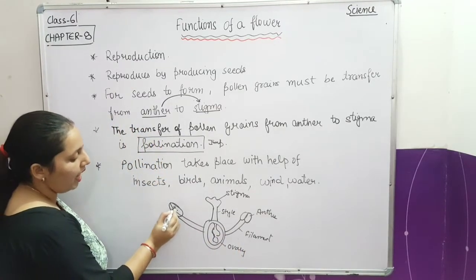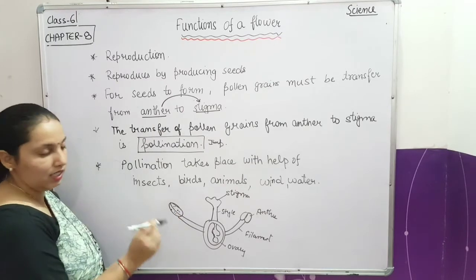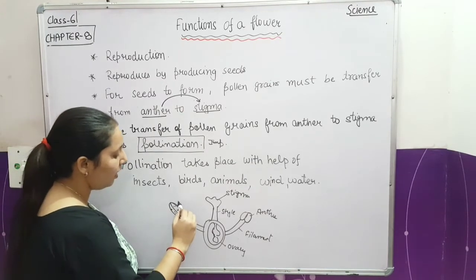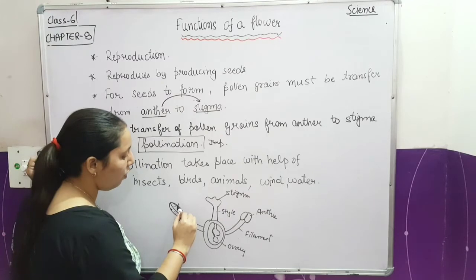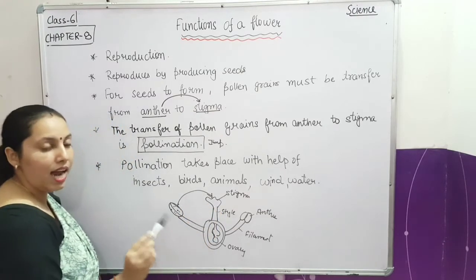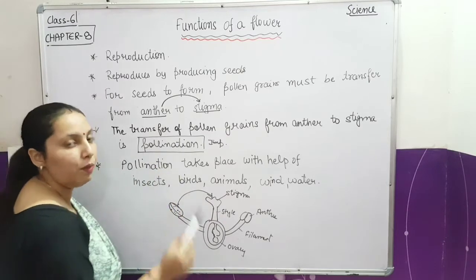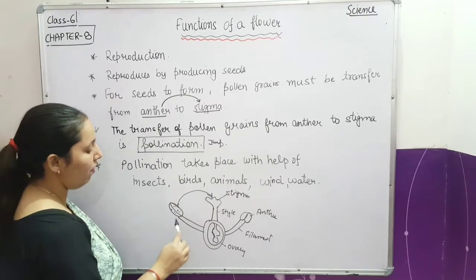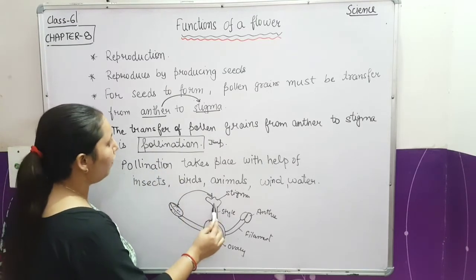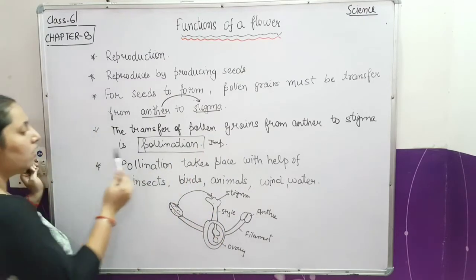The anthers are producing pollen. When the pollen grains transfer from the anther to the stigma, that process is known as pollination. When they go from the male part to the female part, seeds are formed.